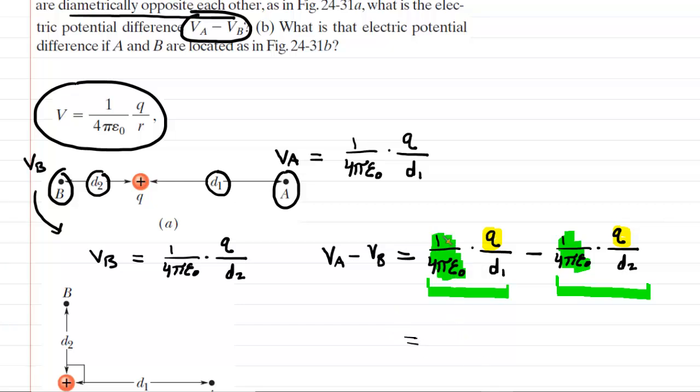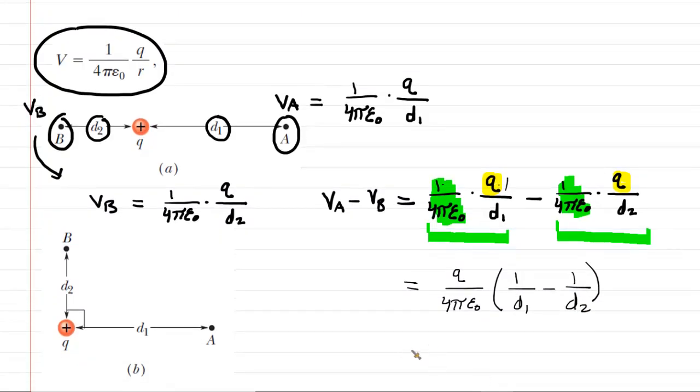Because they have that common factor, we can actually factor that out. So it would look like this. We would have, you're going to have 1 times Q, which is just Q. So it would be Q over 4 pi epsilon naught, and then multiplied by, now when you factor this out, be careful, because you take the Q out, but that does still leave a 1 in the numerator. So it would be 1 over D1, and then minus 1 over D2. So that would be the most attractive version of the VA minus VB.